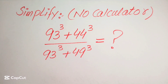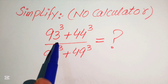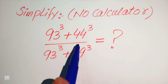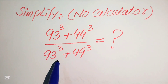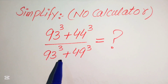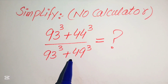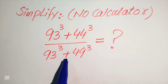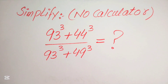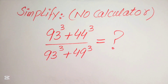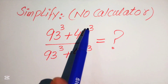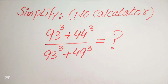Hello everyone. How to simplify this nice algebraic expression: we have 93 cubed plus 44 cubed, divided by 93 cubed plus 49 cubed. We will write this algebraic expression into simplified form. Note that a calculator is not allowed in this problem — we will show all of the working here.